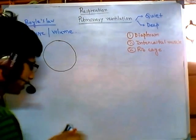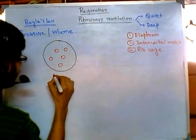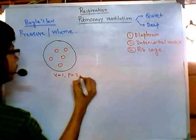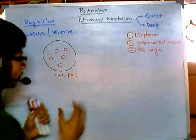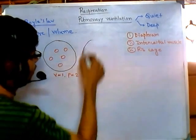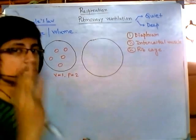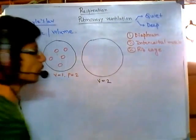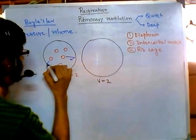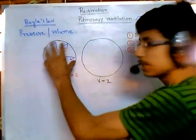Let's say this is a container with gas particles — five gas particles. This container has a fixed volume, let's say volume equals one, and a pressure of two. Now if we increase the volume of this container, but the amount of gas remains the same — the amount of gas remains the same and we just increase the volume, so volume equals two — what happens to the pressure?